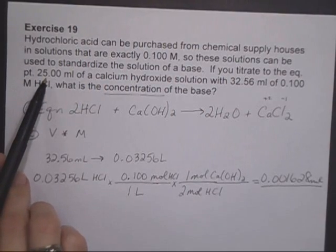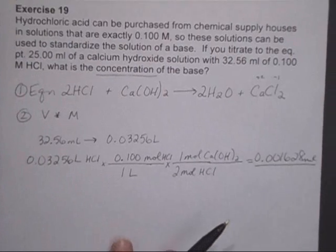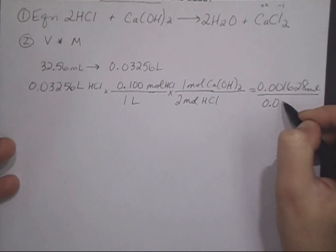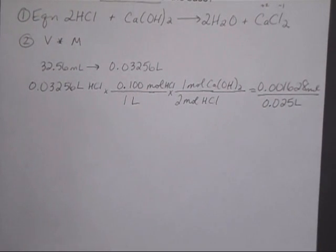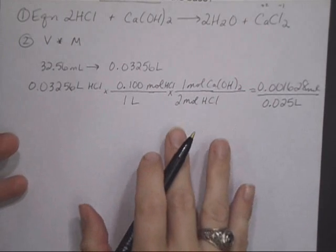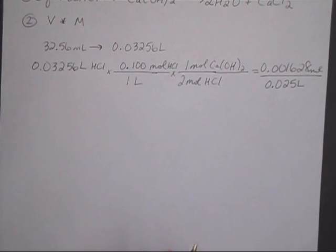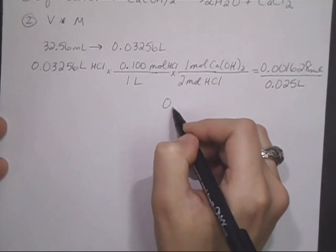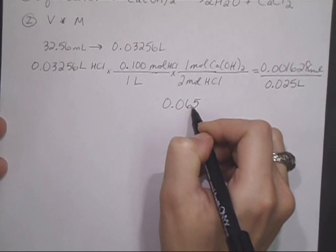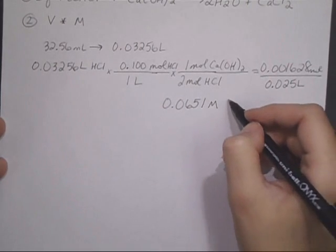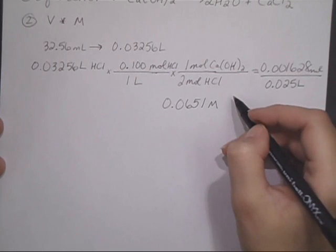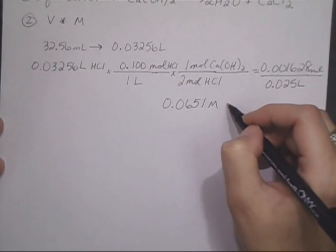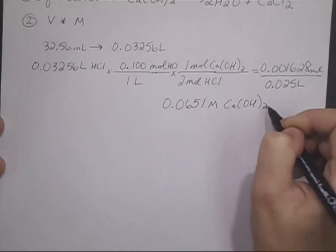And then back up in the question, it's telling us we used 25 milliliters of the calcium hydroxide. So 25 divided by 1,000 is 0.025 liters. You can divide those values. And I got 0.06512 molar. And with sig figs, looks like 3 it is, since we had 0.100 molar. So that is the molarity of my calcium hydroxide.